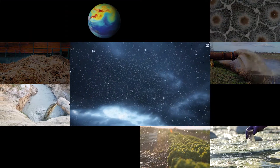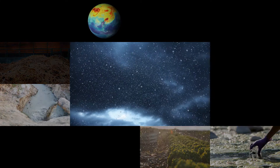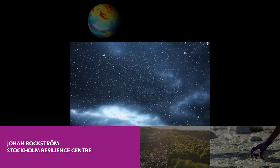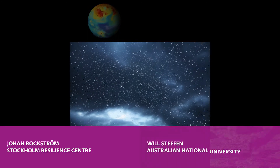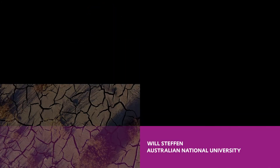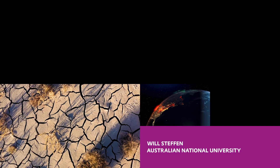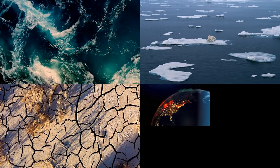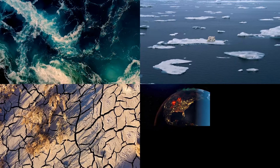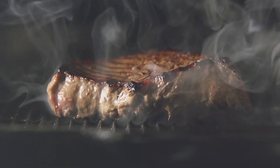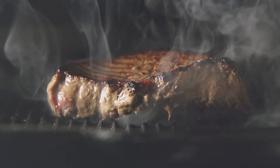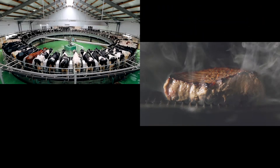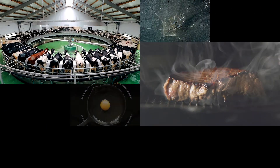According to the planetary boundaries framework proposed by researchers around Johann Rockström from the Stockholm Resilience Center and Will Steffen from the Australian National University, we are dangerously disrupting the biogeochemical nitrogen flow, potentially altering the functioning of the Earth system. Our growing hunger for animal-based proteins aggravates this environmental challenge.